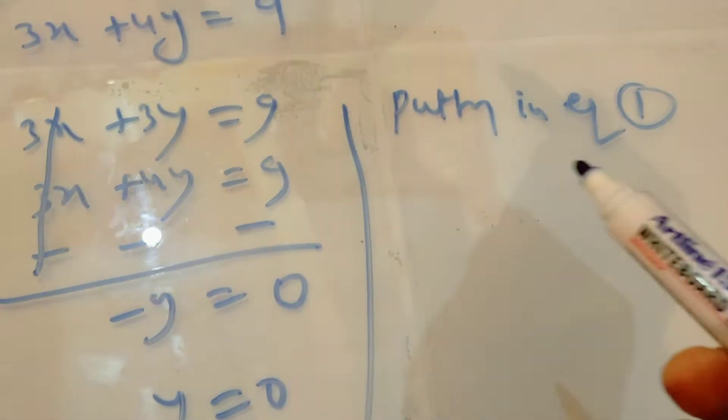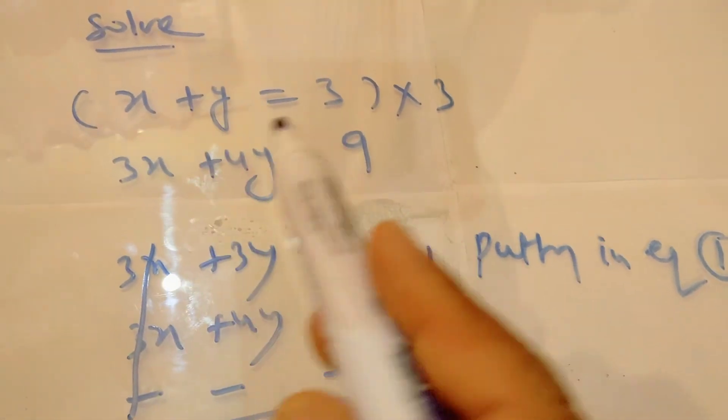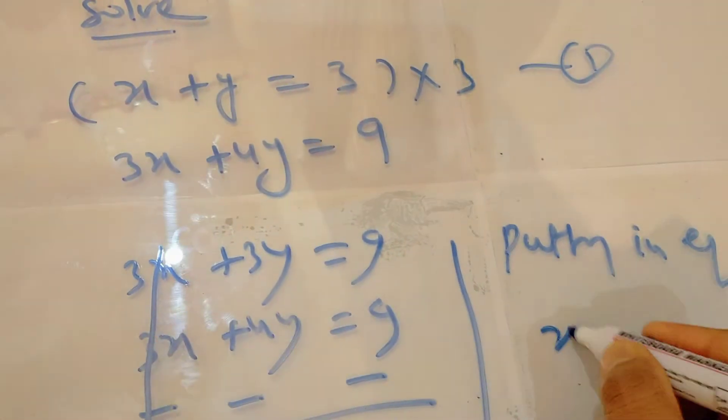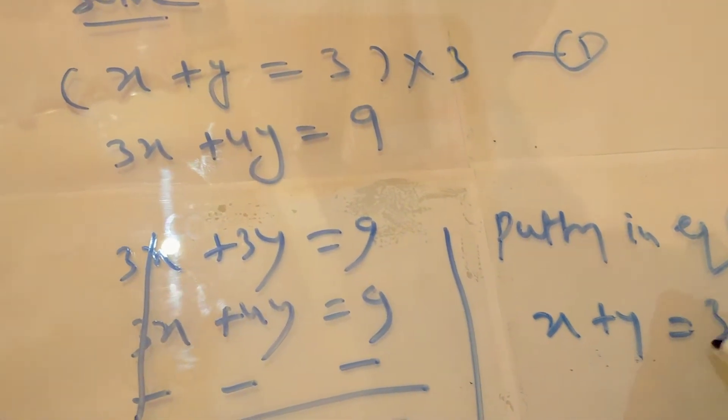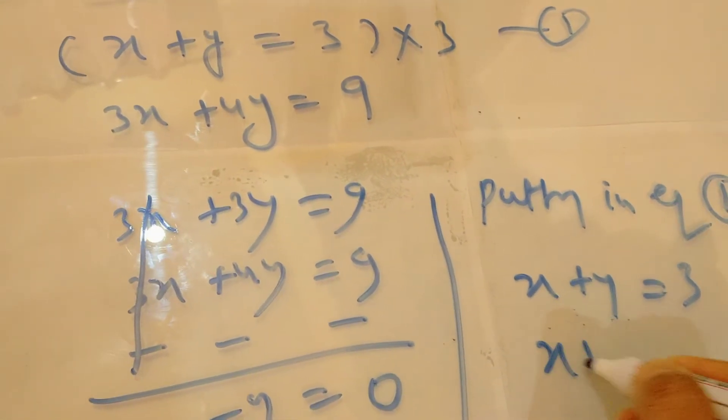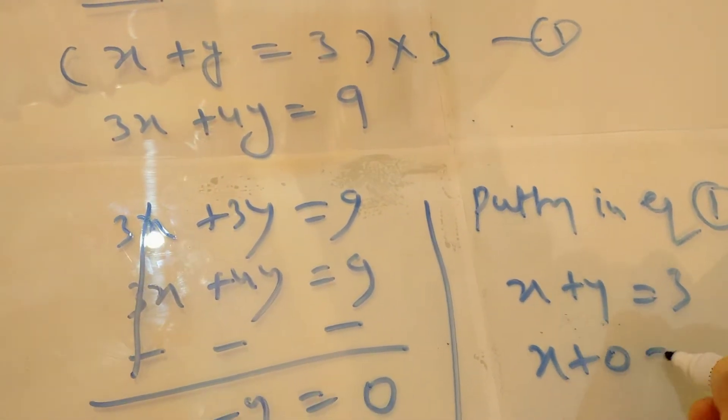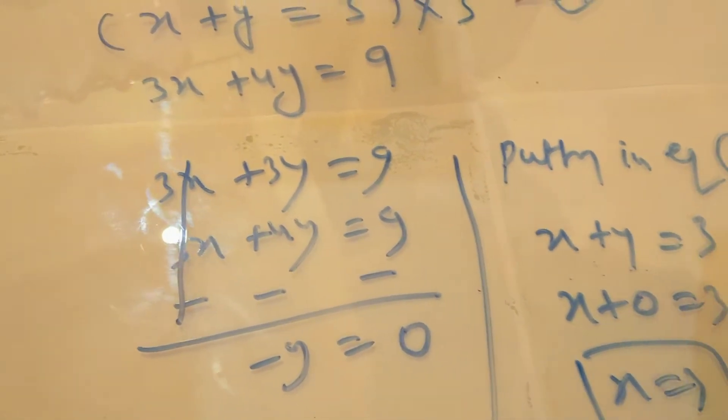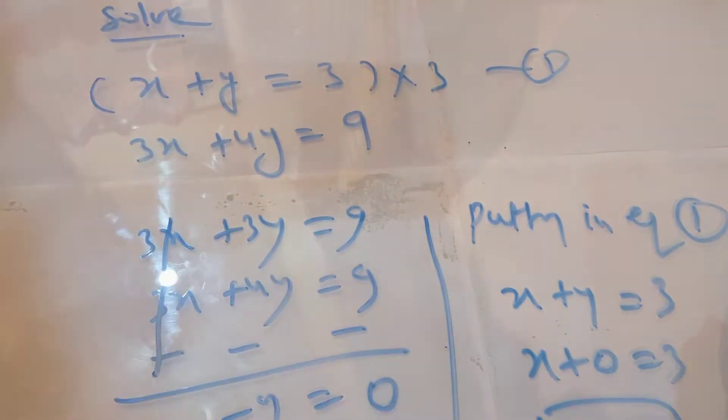You have to substitute this value in equation number 1. This is your equation number 1, so x plus y equals 3. So definitely x plus 0 equals 3. The value of x will be 3. So this is the answer.